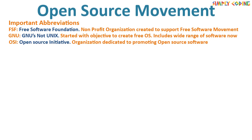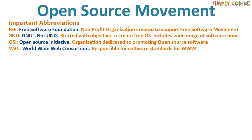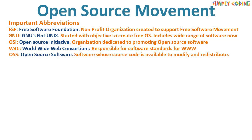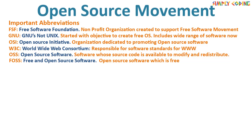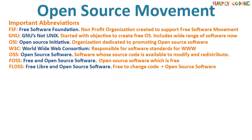OSI stands for Open Source Initiative. It is an organization formed in 1998 to promote the open source movement. They are the ones which have given the open source definition for any open source software. W3C stands for World Wide Web Consortium, responsible for software standards for the World Wide Web. OSS stands for Open Source Software — any software whose source code is available to modify and redistribute. It can be free or paid. Open source software can be either FOSS, meaning free and open source software, or FLOSS, which stands for Free Libre and Open Source Software.